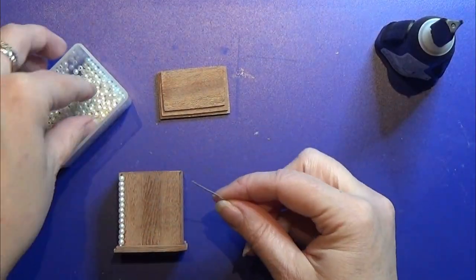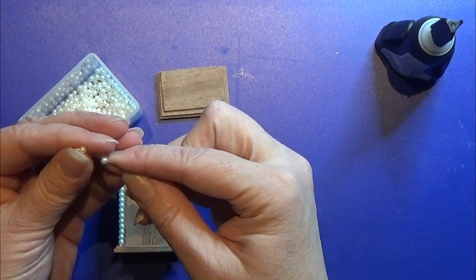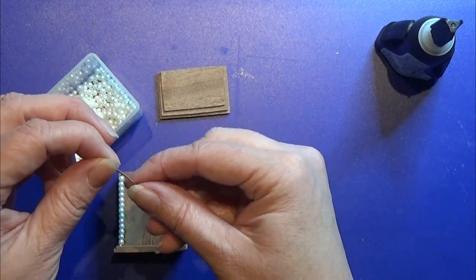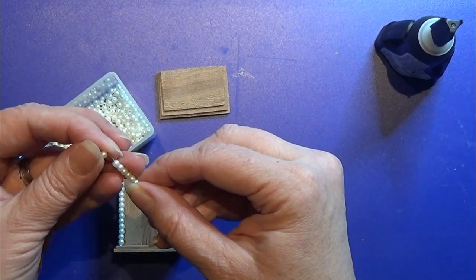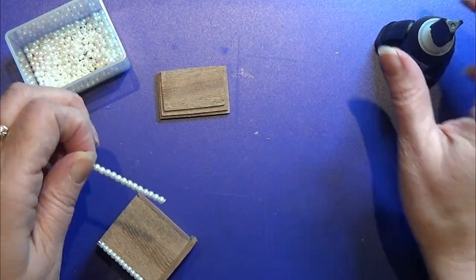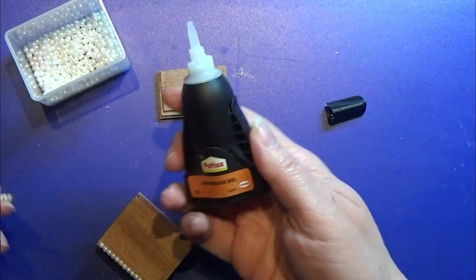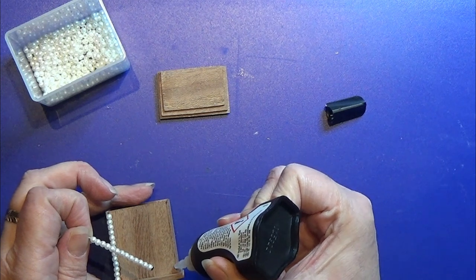I did not have a brass tube that was big enough for this project, so I took an eye pin and some really nice beads that I liked, and I'm going to put that on the eye pin and gluing it on the front of this box.